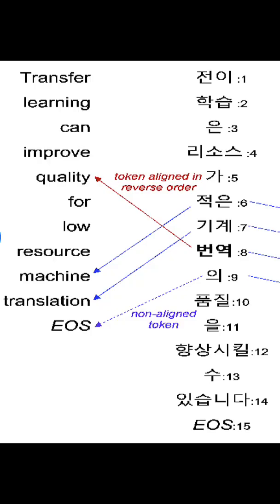5. Cross-attention. This is when words of a sentence pay attention to the words in another sentence. And this too is done to create word vectors that understand context.